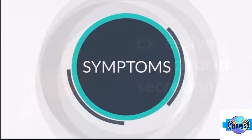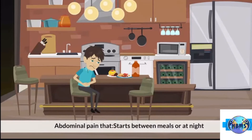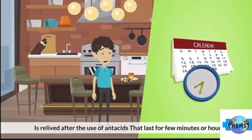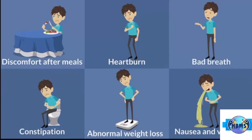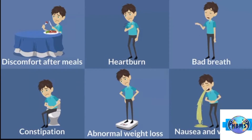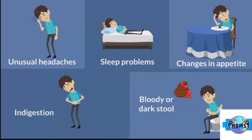Symptoms of ulcers include abdominal pain that starts between meals or at night and is relieved after use of antacids for a few minutes or hours, discomfort after meals, heartburn, bad breath, constipation, abnormal weight loss, nausea and vomiting, unusual headaches, sleep problems, changes in appetite, indigestion, and bloody or dark stool.